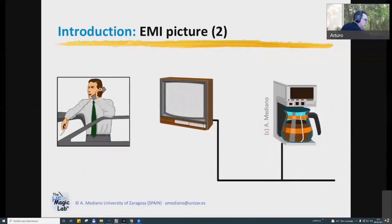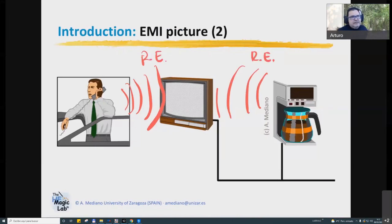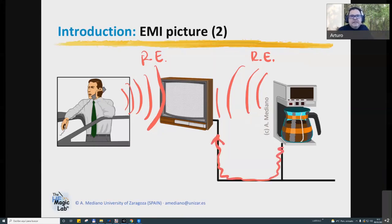Let me start with the problem. Remember, we are interested in EMI. In EMI, we have two different problems. The first problem considers that the coupling of energy from the culprit to the victim is through the air — this is what we call radiated emissions. Sometimes the radiated emissions are coming from unintended antennas, like a coffee machine or a computer. Sometimes the noise is coming from a wireless device like a walkie-talkie or telephone. The other possibility is to have the noise going from the culprit to the victim through the power supply system, DC or AC depending on the application — this is what we call conducted emissions.